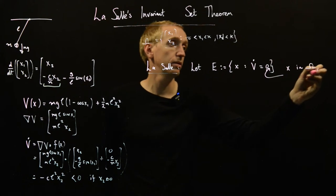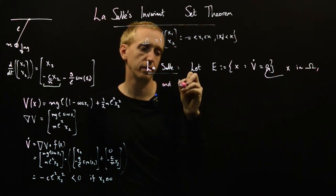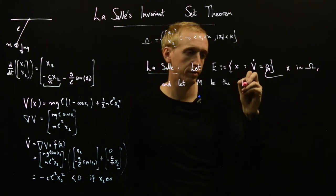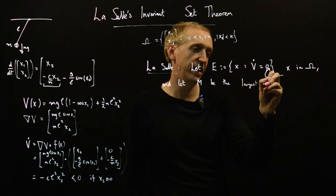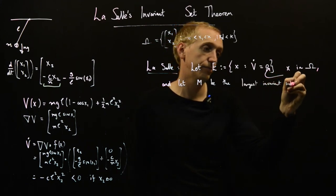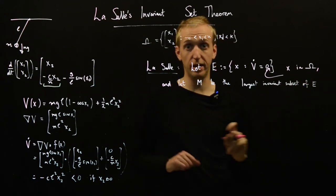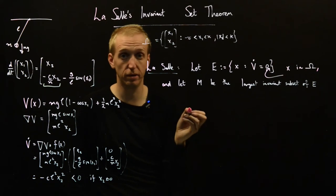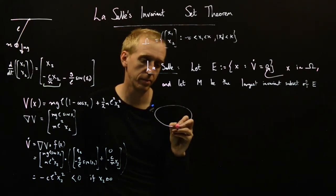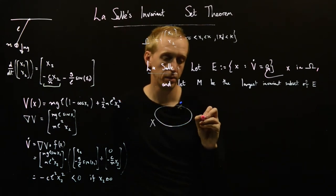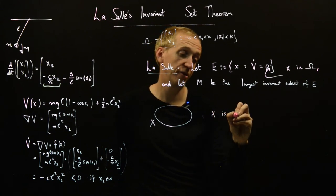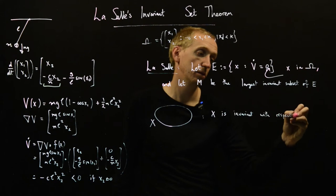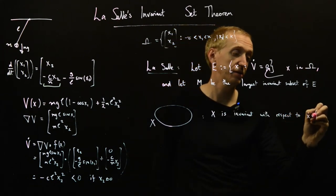Then the LaSalle Invariant Set Theorem says, so we have this E, and let M be the largest invariant subset of E. So what does this mean? We need to introduce the idea of an invariant subset, and this is always done with respect to a particular set of dynamics.